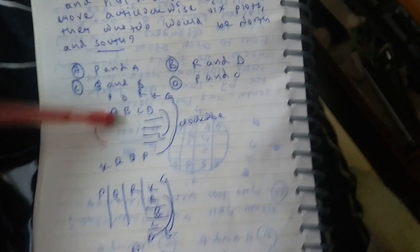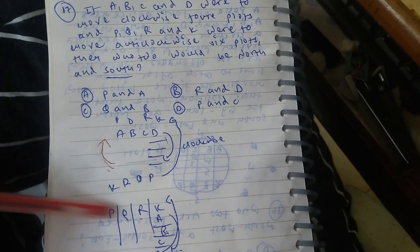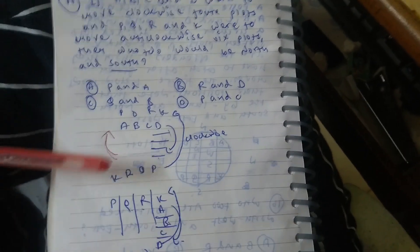So A, B, C, D are moving in the clockwise direction four plots, and after that P, Q, R, K as offenders are moving anticlockwise direction, by skipping six plots.